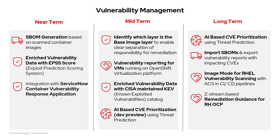The long-term goal for vulnerability management is to move AI-based prioritization to GA, supporting the topic from our mid-term goal. We then want to import SBOMs and export vulnerability reports, making tracking vulnerabilities from different sources easier. Third, image mode for Red Hat Enterprise Linux vulnerability scanning, which integrates ACS into CI/CD pipelines to improve security checks and helps identify vulnerabilities in RHEL-based images and app layers separately. Lastly, Z-stream-based remediation guidance for OpenShift — this helps teams fix risk in OpenShift images as ACS keeps up with Red Hat's weekly security patches and forwards remediation advice.